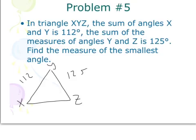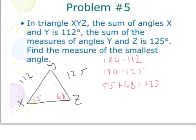X and Y equals 112 or whatever's left over for Z, I can just do 180 minus 112. And I'm left with 68. And then I can do the same thing for X. 180 minus 125. And I'm left with 55. So from here, I know X is 55, Z is 68. I can also find out why. I would just add 55 plus 68. And I get 123. And I can subtract that from 180. So 180 minus 123. And that equals 57.